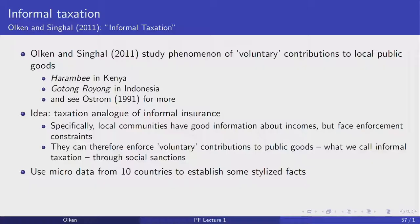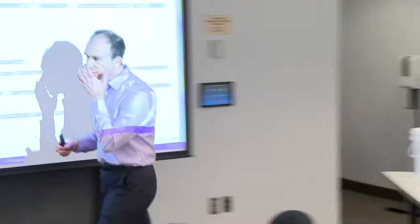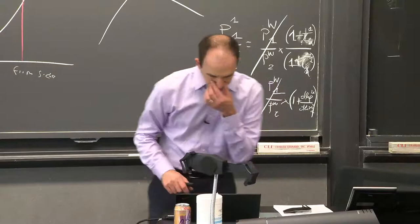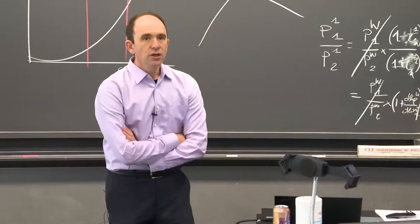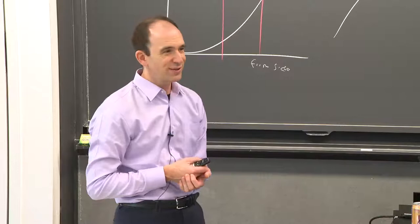Switching gears to labor markets and development — another area with a lot of movement in the literature over the past five years. The plan: first, the surplus labor hypothesis and the separation paper; then labor supply and the separation test as a test for frictionless labor markets; next class, nominal rigidity, behavioral issues, frictions in labor demand, and urban labor markets.